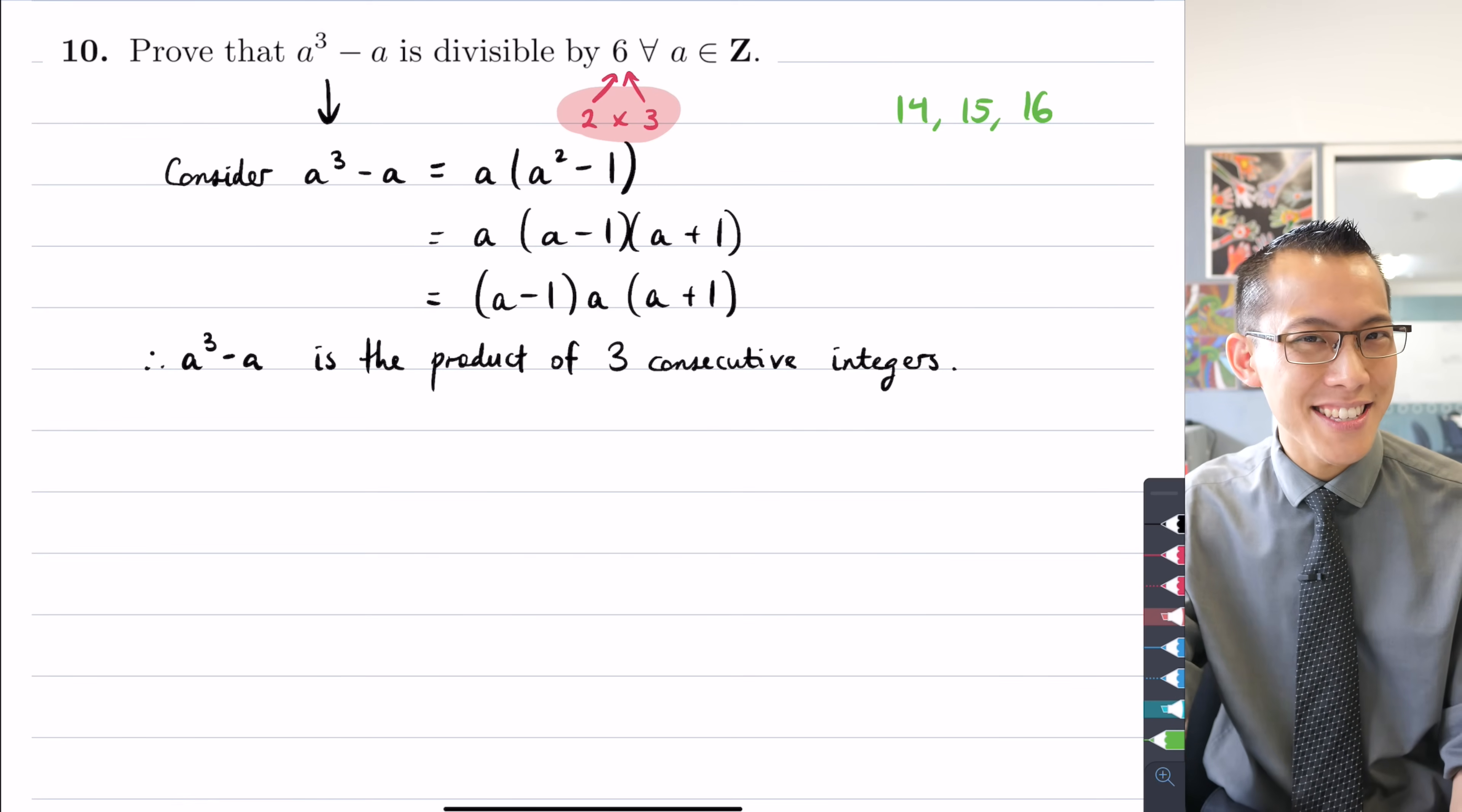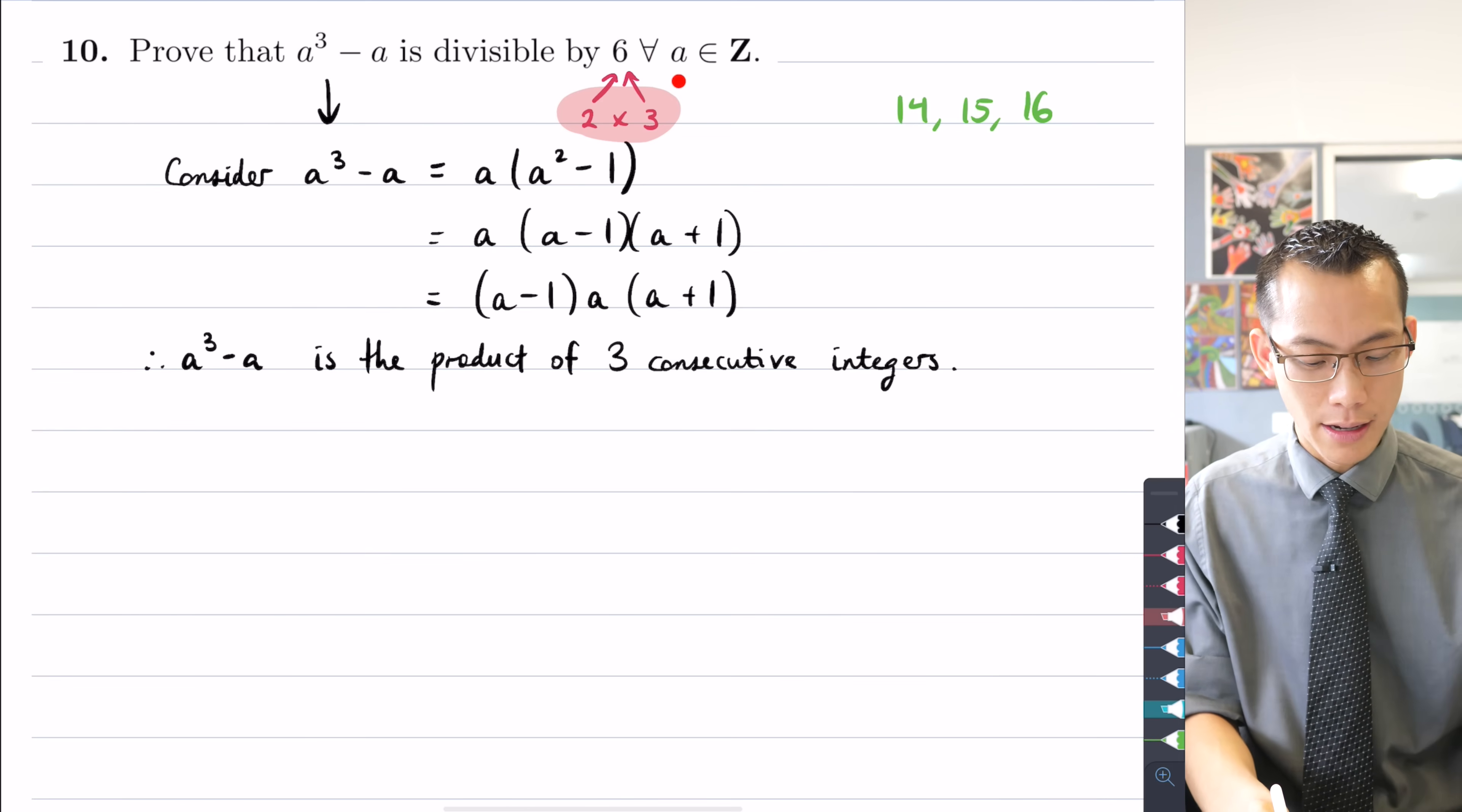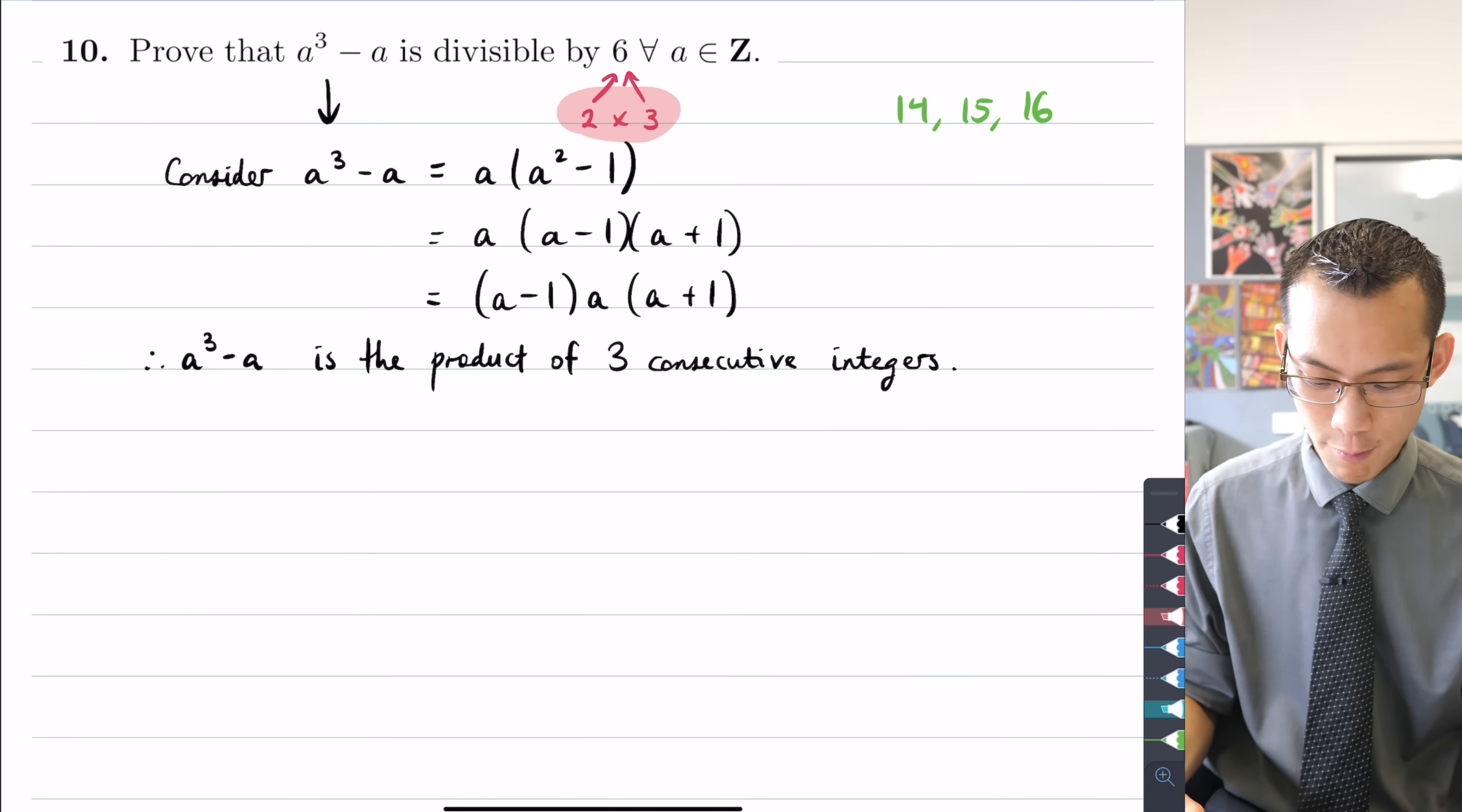It's also called proof by cases or proof by case analysis. What we're going to try and do is take an infinite set of possibilities. A could be anything, and we're going to boil that down to a finite set of cases that cover all of these infinite possibilities. So hold onto your hats, here's how we're going to prove this rigorously.